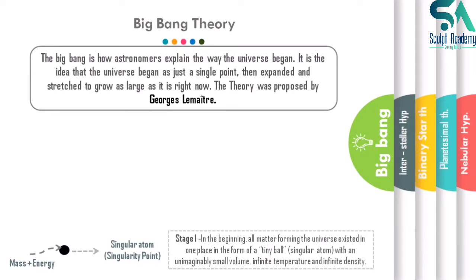As seen on screen, there is a tiny black ball known as the singularity point — the only thing that existed in space at that moment. This singularity point behaved like a black hole, which has infinite gravitational pull and absorbs everything in its near vicinity. The singularity point absorbed all mass and energy in its vicinity, and because of this its density increased infinitely.